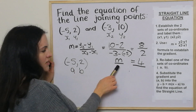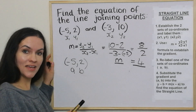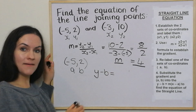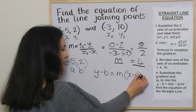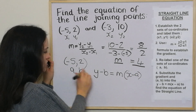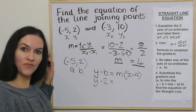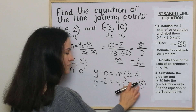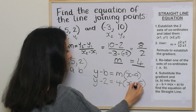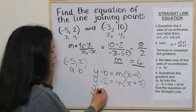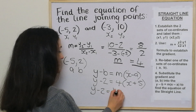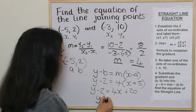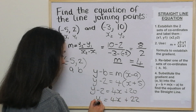We substitute the gradient and a, b into the formula to find the equation of the straight line: y minus b equals m bracket x minus a. So b is 2, so it's y minus 2 equals 4 bracket x minus a which is negative 5. Because that's negative 5, taking away a negative becomes plus. We multiply it out: y minus 2 equals 4x plus 20. Then we add 2 to both sides to get y equals 4x plus 22. And there's our answer.